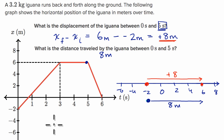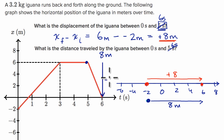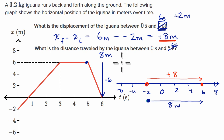What would be different if this said six seconds instead of five — between zero and six seconds? For displacement, we went plus eight, but then we're going to go another negative six. So you'd have plus eight minus six, giving a net displacement of plus two meters. Another way to think about it: you would finish at zero, you started at negative two, and zero minus negative two is two.